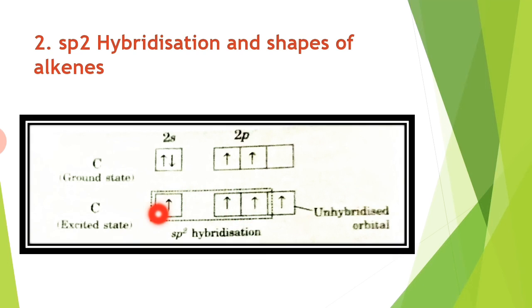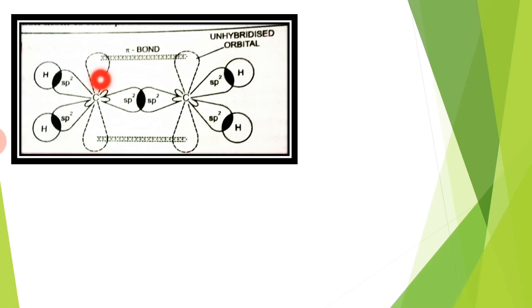For example, in the case of ethylene, one sp2 hybrid orbital of one carbon atom overlaps with the other sp2 hybrid orbital of the other carbon atom, forming a carbon-carbon sigma bond, while the other two sp2 hybrid orbitals of both carbon atoms overlap with the 1s orbital of hydrogen atoms, forming C-H sigma bonds. The unhybridized 2p orbital of one carbon atom overlaps with another unhybridized 2p orbital of the other carbon atom to form the pi bond.